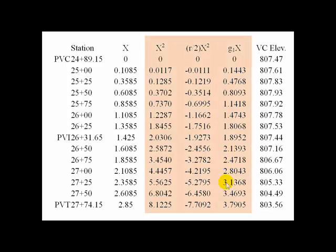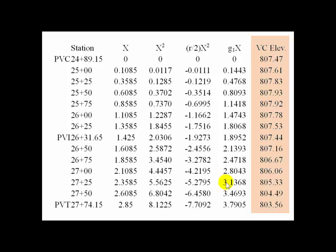The values of X squared, R over 2 times X squared, and G1X all show up there. And the vertical curve elevation is built off of the PVC station.